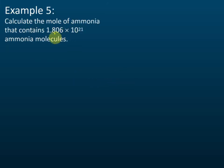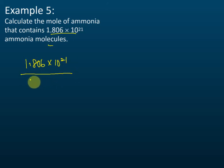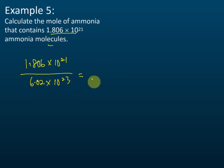They give you the number of molecules and want you to find the number of moles. We take 1.806 × 10²¹ and divide by Avogadro's constant 6.02 × 10²³, giving 0.003 moles.